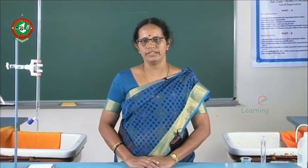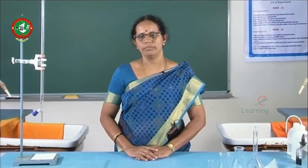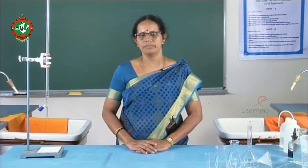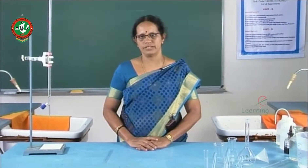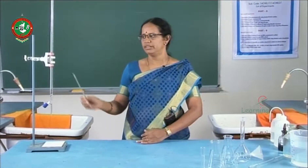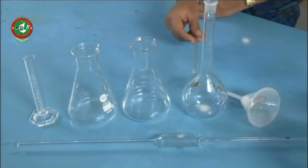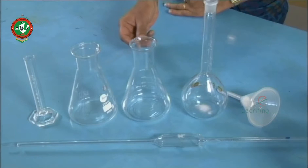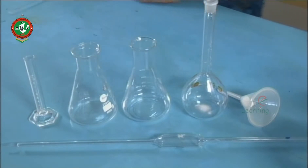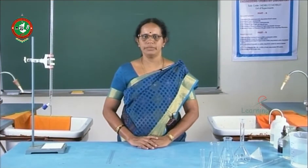This point is called the end point. The different types of titrations are complexometric titration, acid-base titrations, redox titrations, precipitation titrations, etc. The apparatus required are the burette, pipette, standard flask, conical flask, and measuring cylinder. Likewise, estimation can also be carried out by instrumental methods.